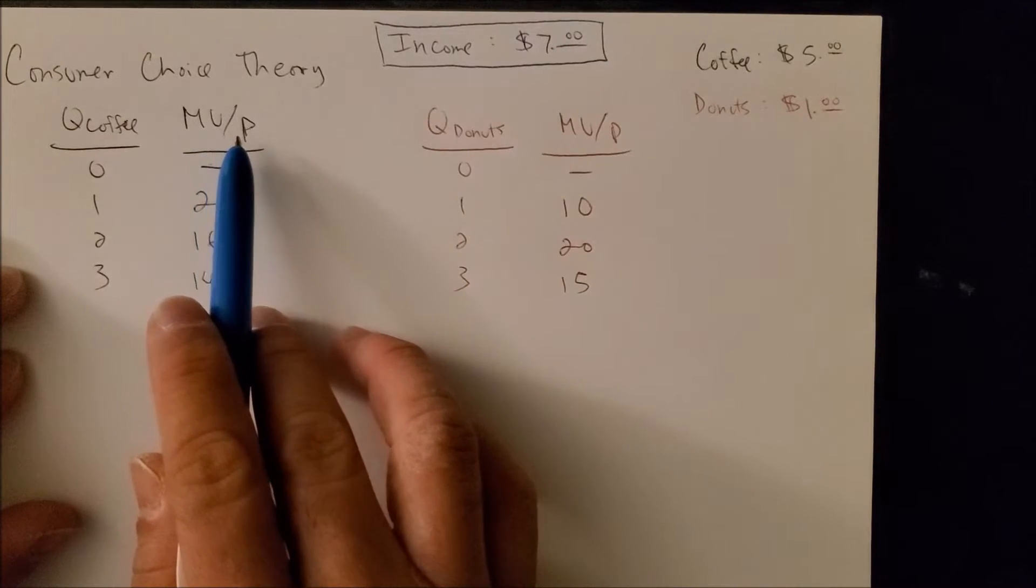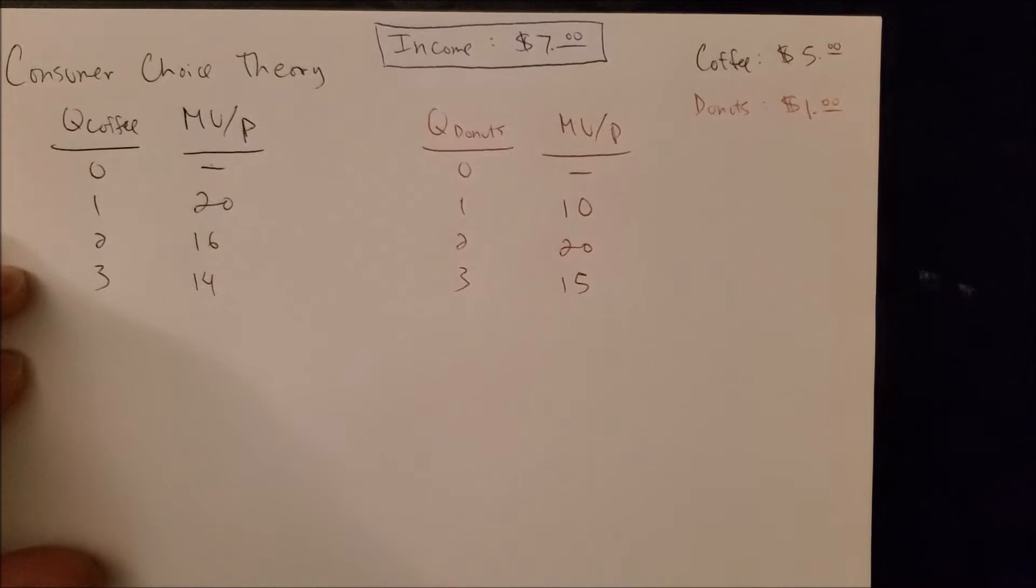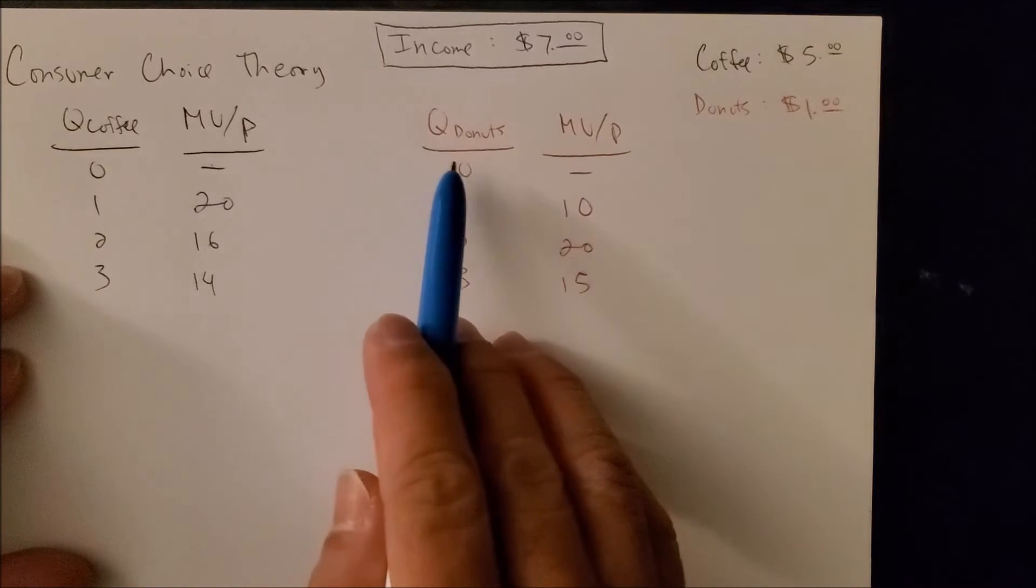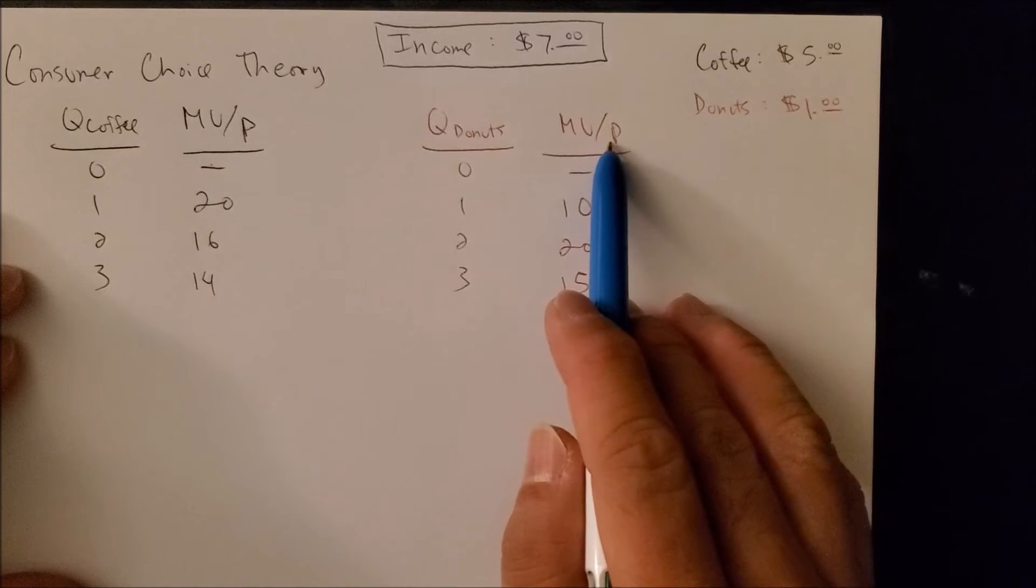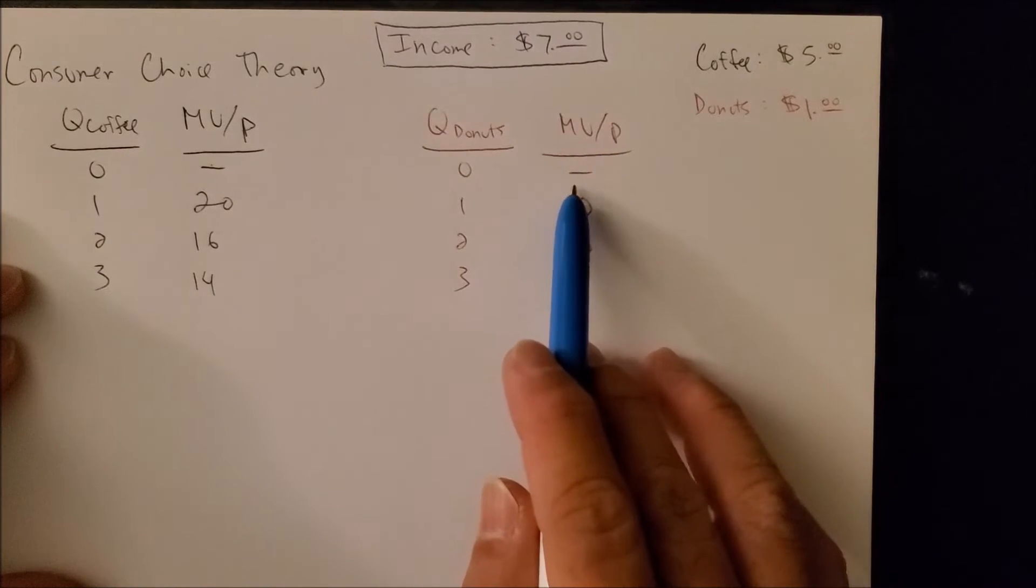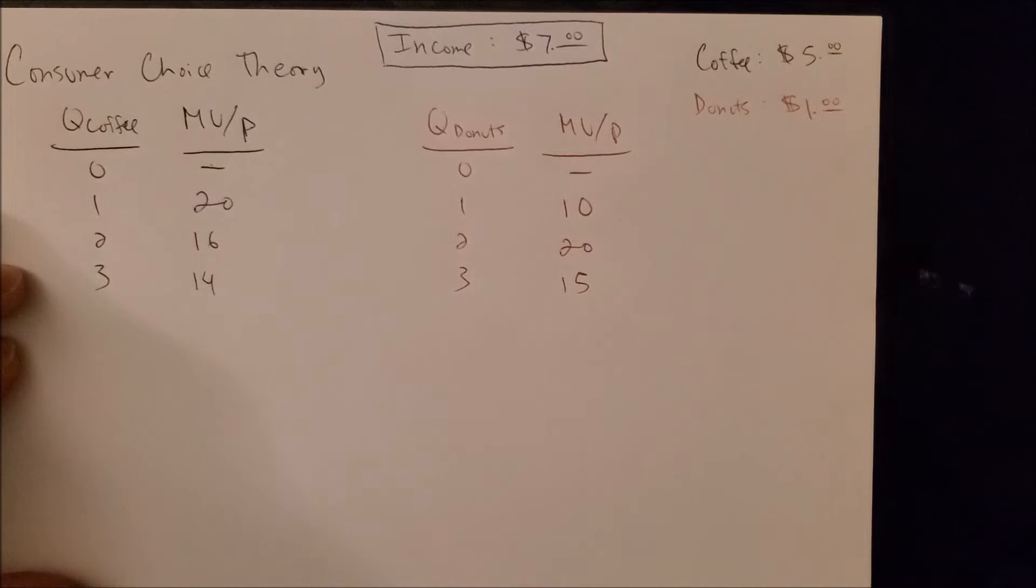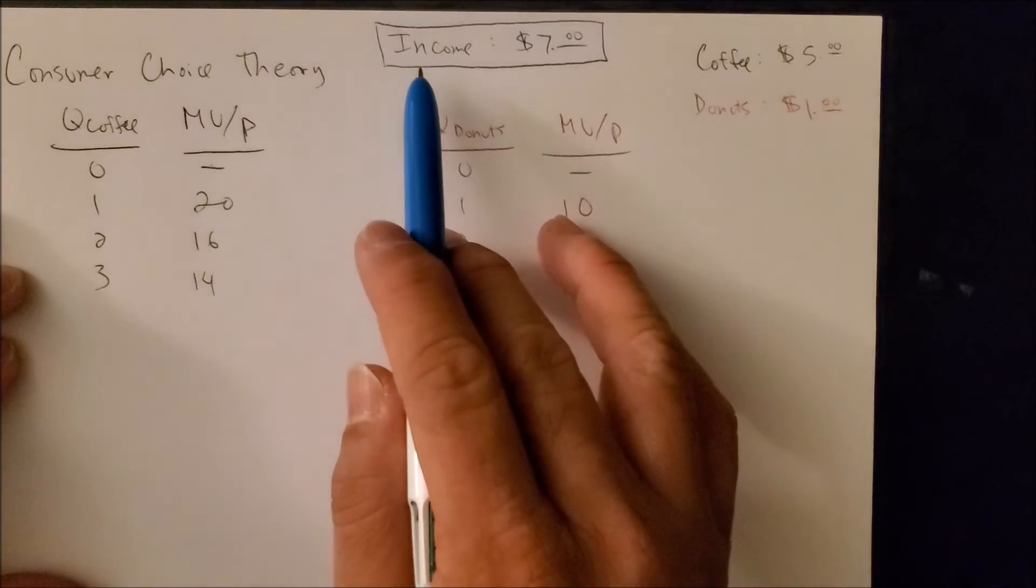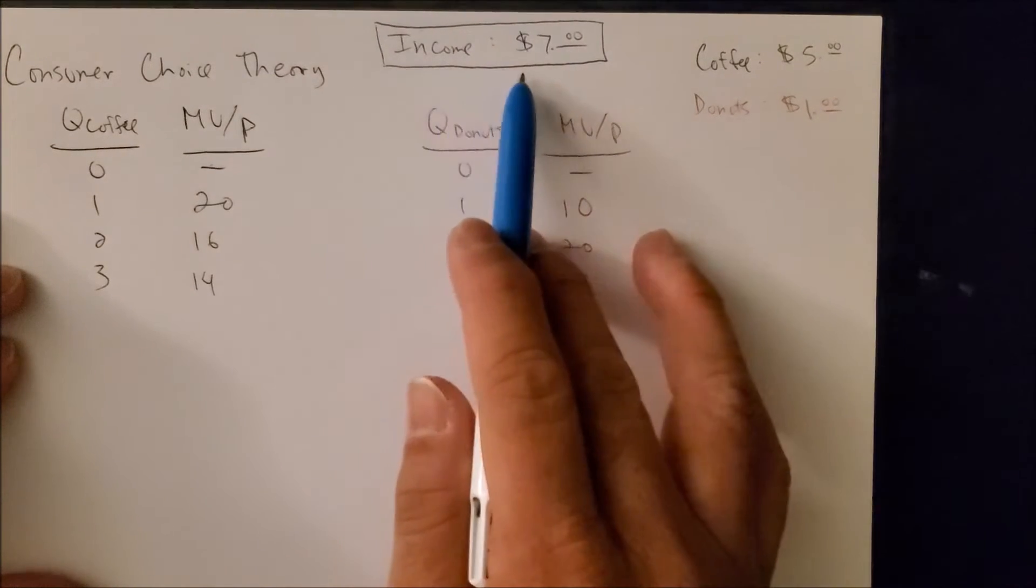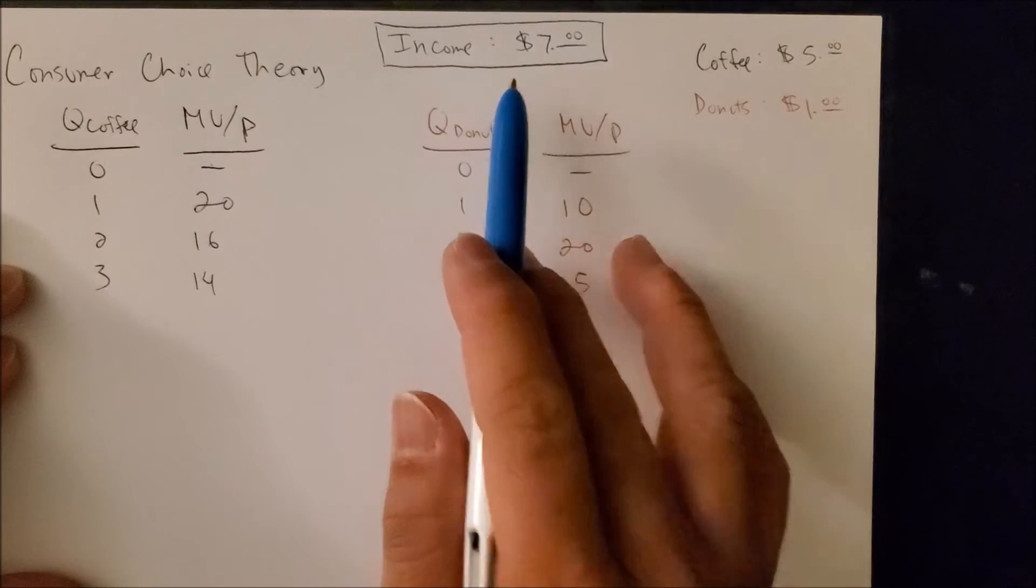Now we could find the MU over P, price, and price is given. So let's say we have not one but two goods: coffee and donuts. For donuts we have the MU over P as follows—nothing for zero, 10, 20, and 15. We also know the price of donuts is one dollar, and you have a total income of seven dollars in your wallet.